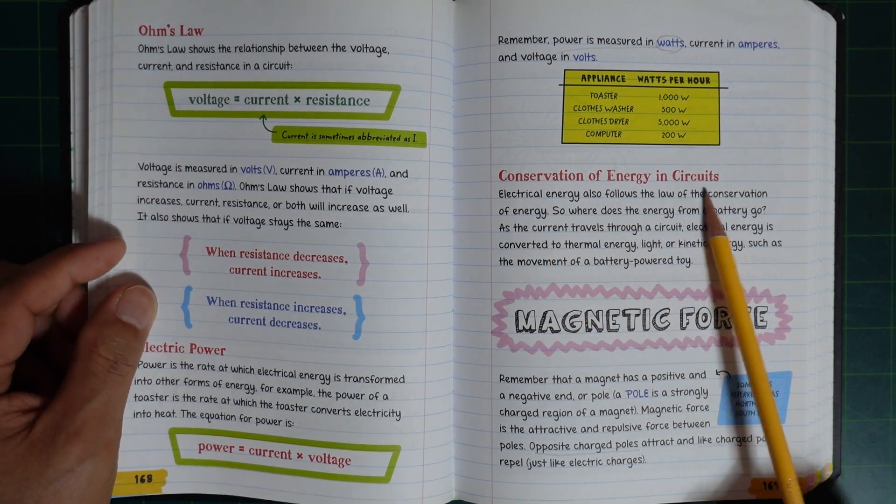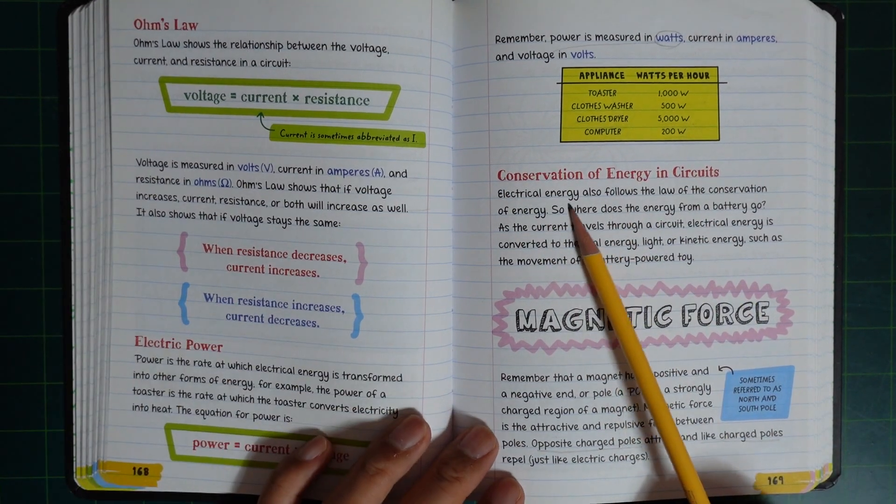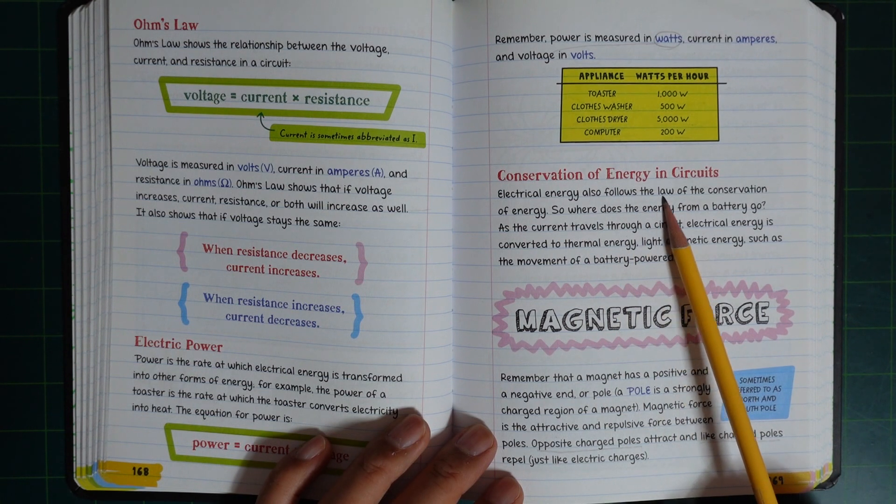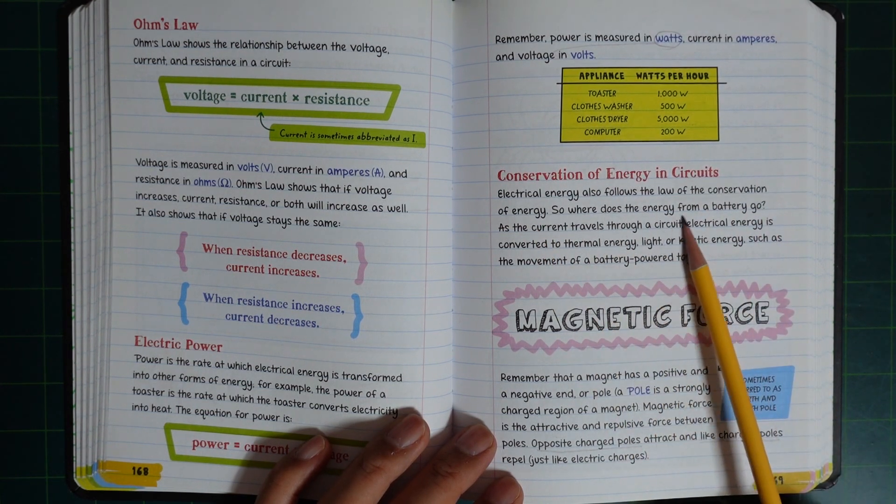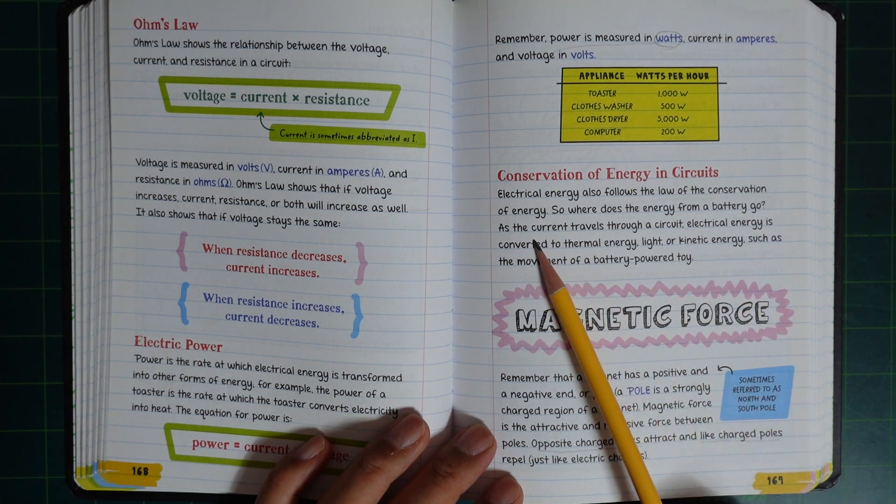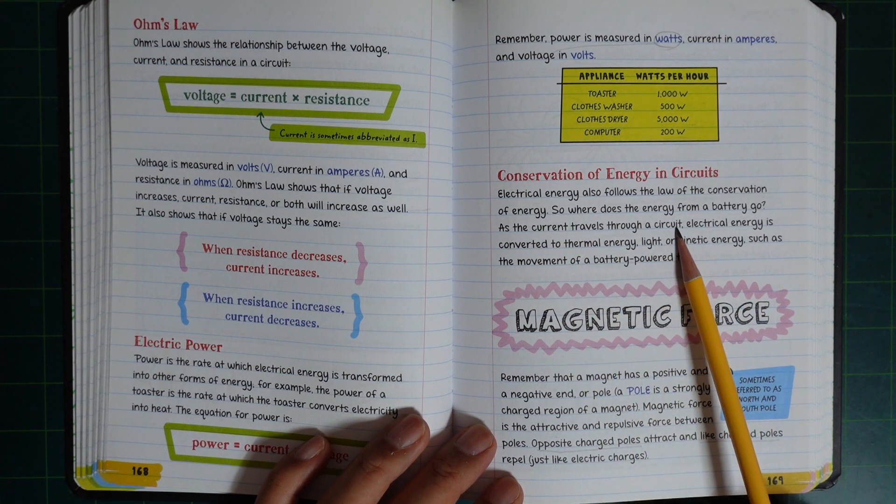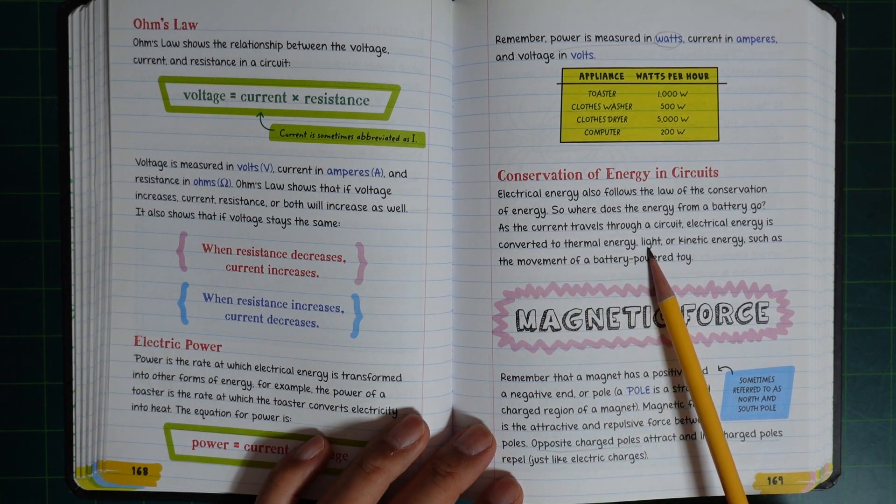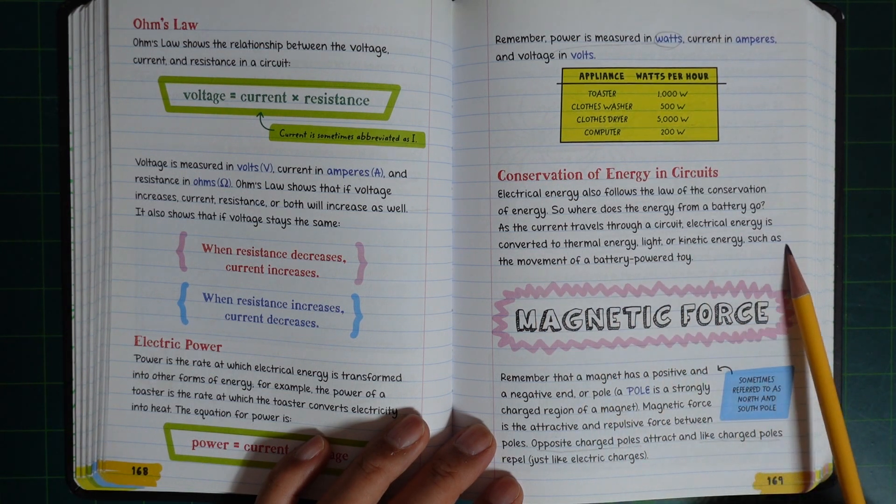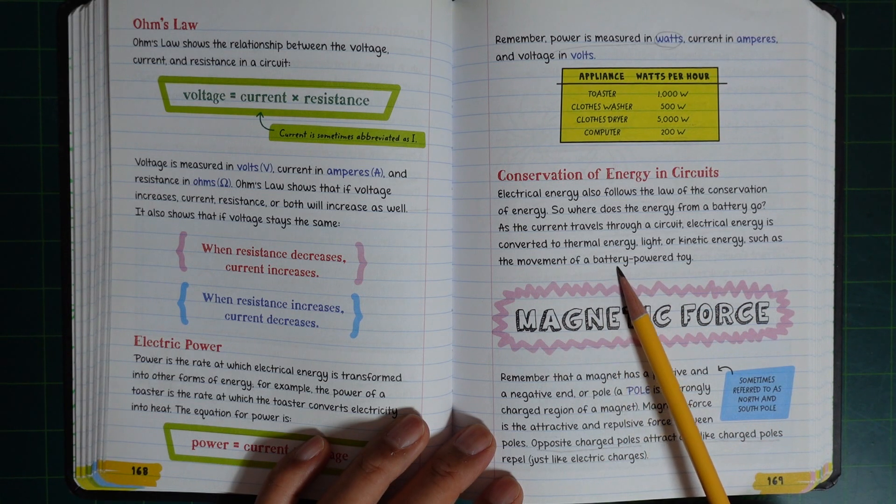Electrical energy also follows the law of conservation of energy. So where does the energy from a battery go? As the current travels through a circuit, electrical energy is converted to thermal energy, light, or kinetic energy, such as the movement of a battery-powered toy.